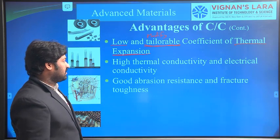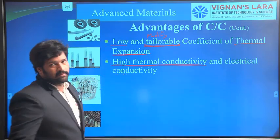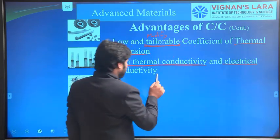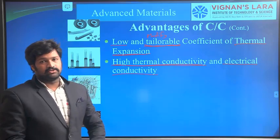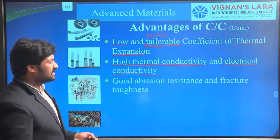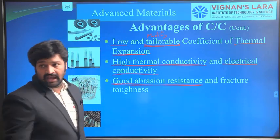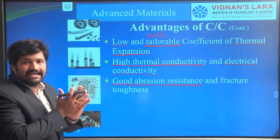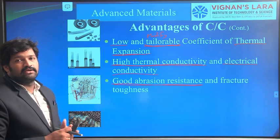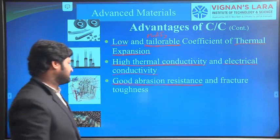These composites have high thermal conductivity, meaning a high amount of heat can be transmitted through them. Heat as well as electricity can also be passed through these carbon composites, so they have both high thermal conductivity and high electrical conductivity. They also have good abrasion resistance, meaning high wear resistance, providing good dimensional stability — the dimensions do not reduce over time due to rubbing.